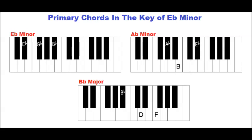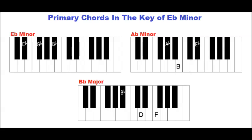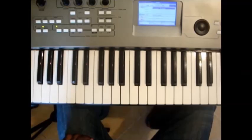The 1st primary chord is a minor, the 2nd is a minor, and the 3rd is a major chord. The primary chords in the key of E-flat minor are E-flat minor, A-flat minor, and B-flat major.